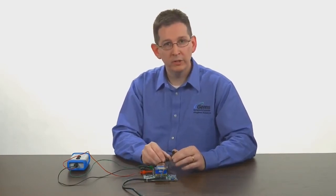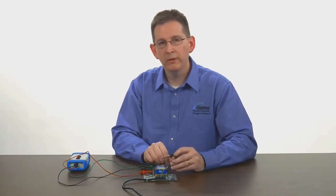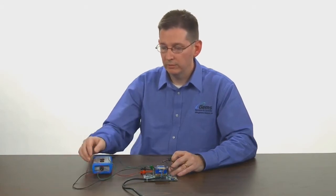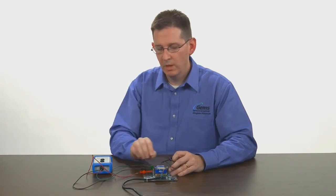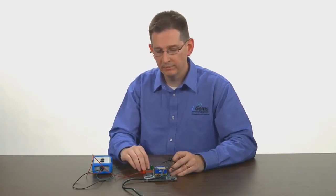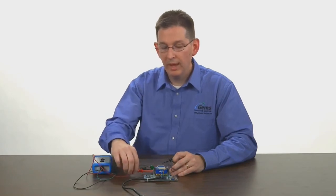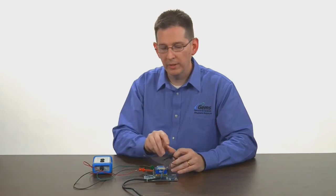Another way to verify the functionality of your product is to monitor the relay status. We've done that here with a light box. We've connected to the common, the normally open with the green wire, and the normally closed side of the relay with the red wire with their corresponding lights.